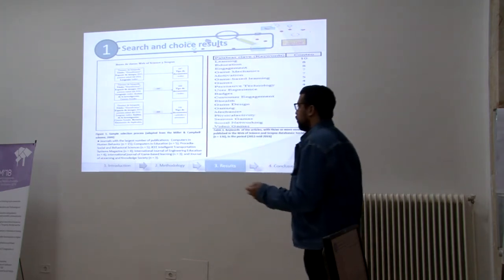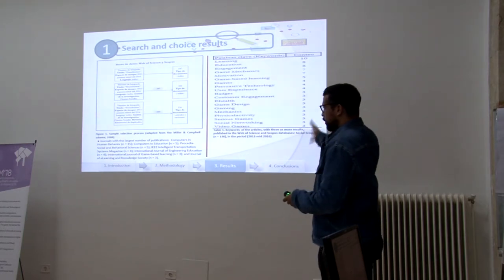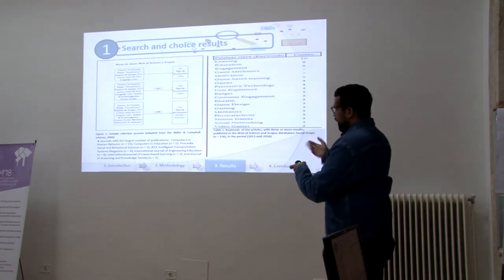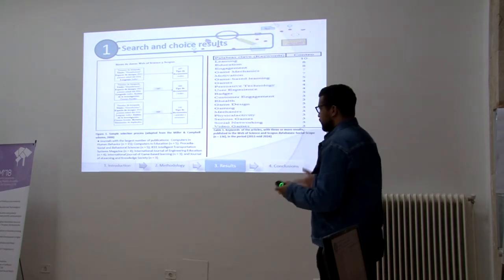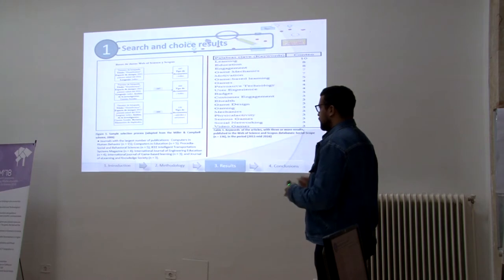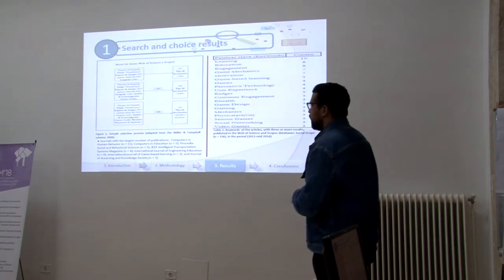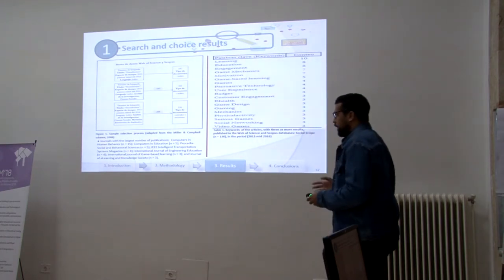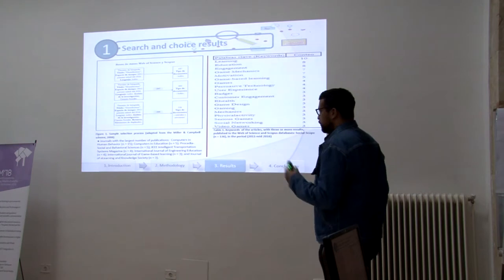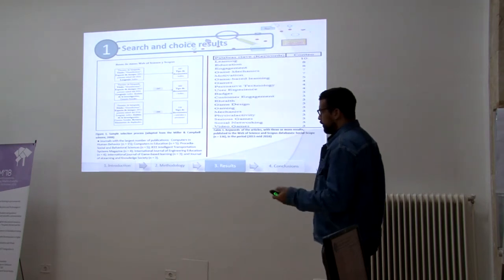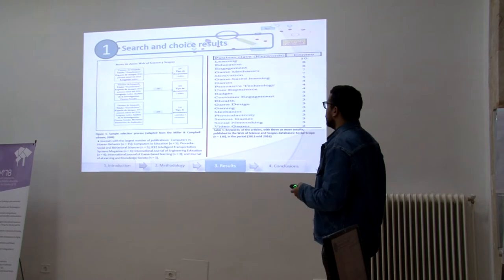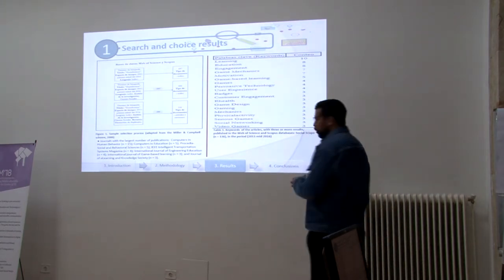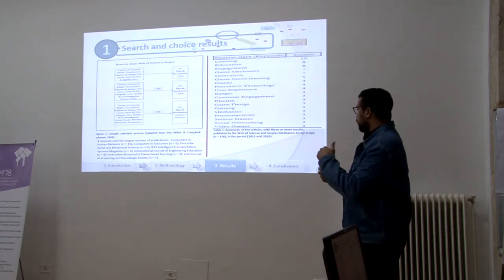The journal with the largest number of publications was Computers in Human Behavior with 15 articles. Computers and Education with 5. Procedia — Social and Behavioral Sciences with 5. Intelligent Transportation with 4 articles. International Journal of Engineering Education with 3. International Journal of Game-Based Learning with 3. And Journal of e-Learning and Knowledge Studies with 3. The keyword co-occurrence showed matches with three or more results.